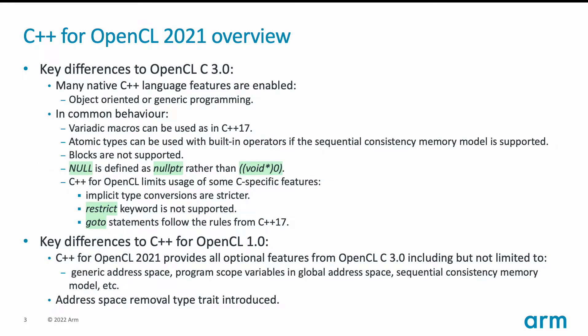Just a brief overview of C++ for OpenCL 2021 in one slide. The key difference to OpenCL 3 is obviously in the fact that you can use many C++ language features in it, such as features related to object-oriented programming paradigm or to generic programming paradigm.